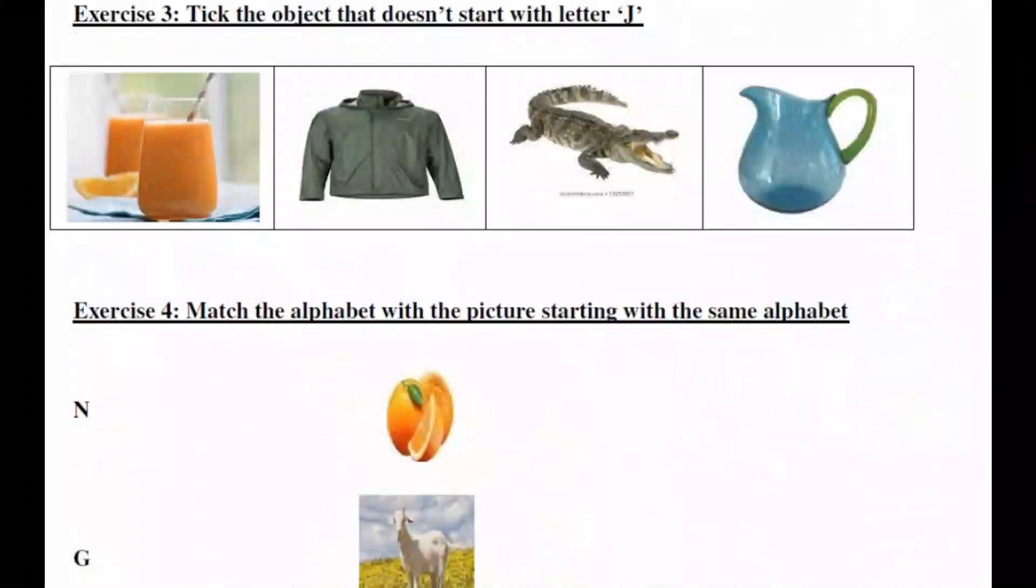Exercise number 3. Tick the object that does not start with letter J. That does not start, which does not start with letter J. You have to read the question carefully, what is given in the question. See, J for juice, J for jacket, and J for jug also. But this picture, crocodile, this starts with C. So we need to circle this.